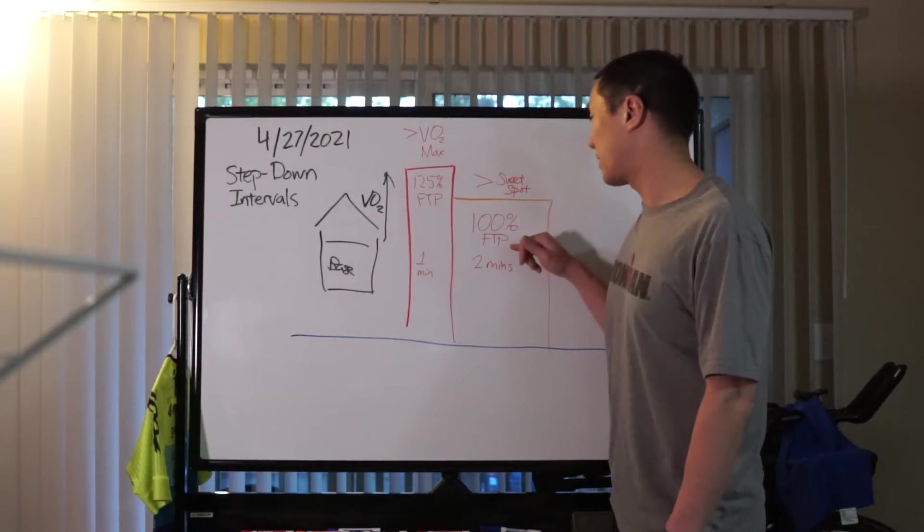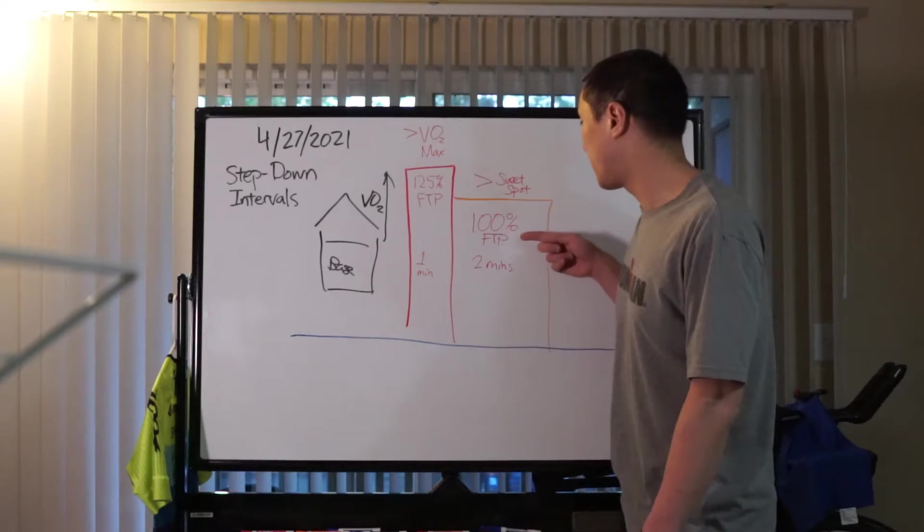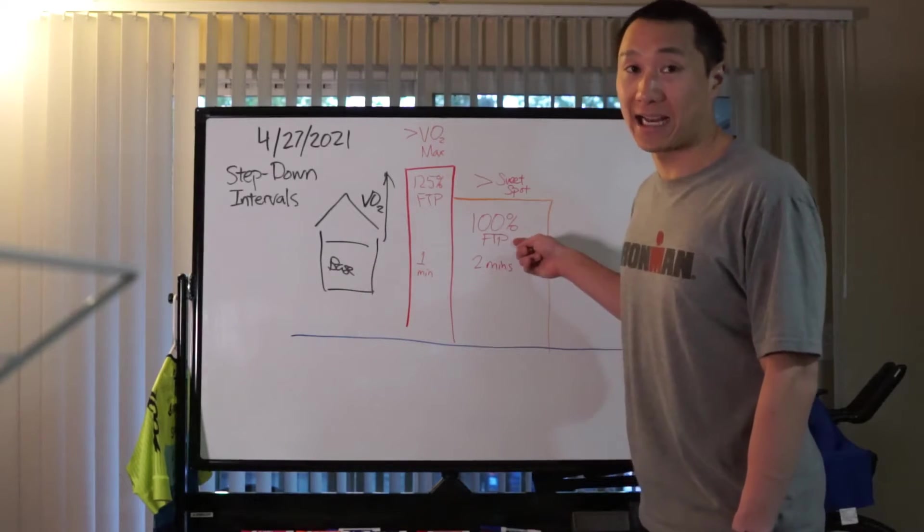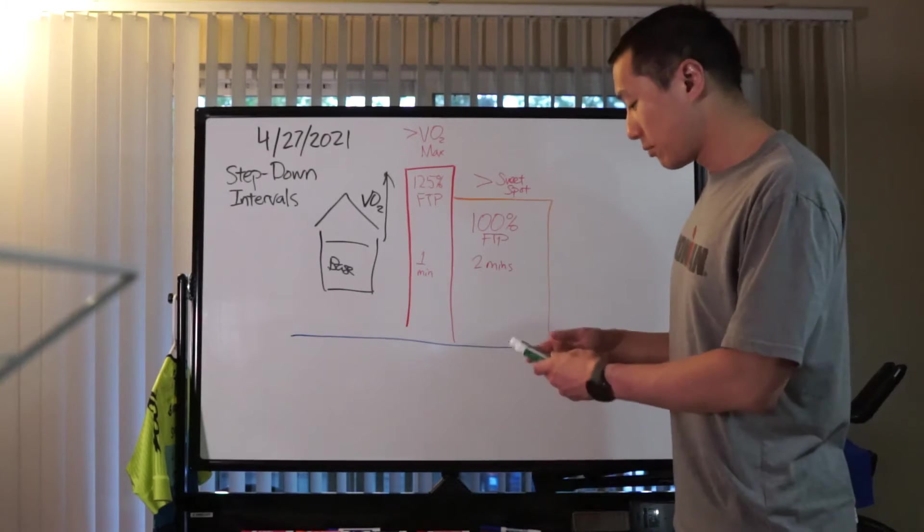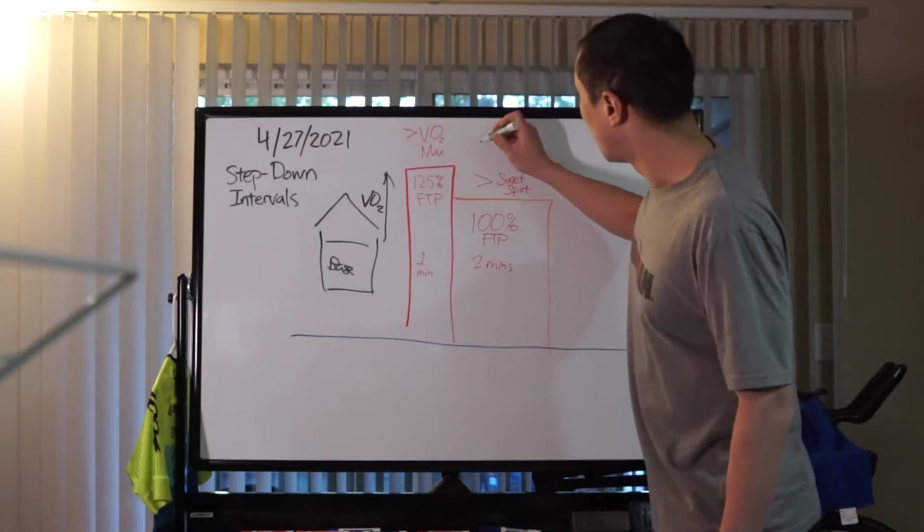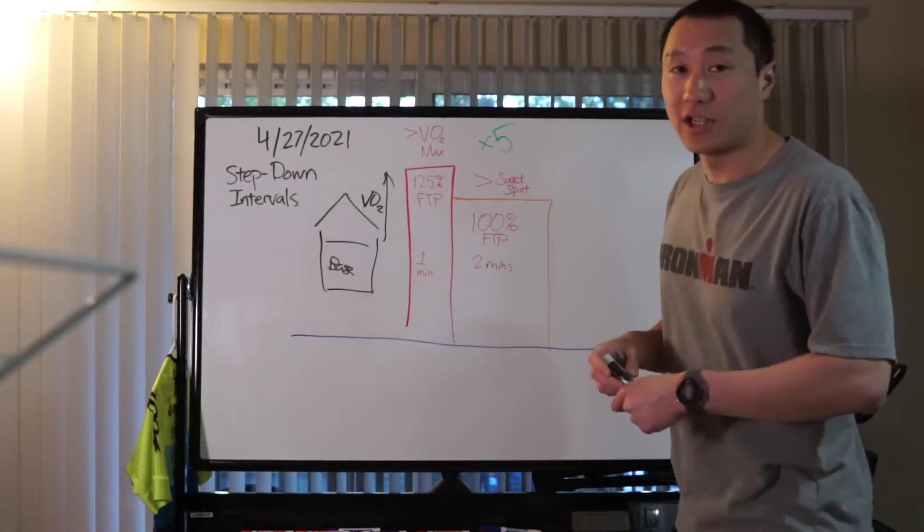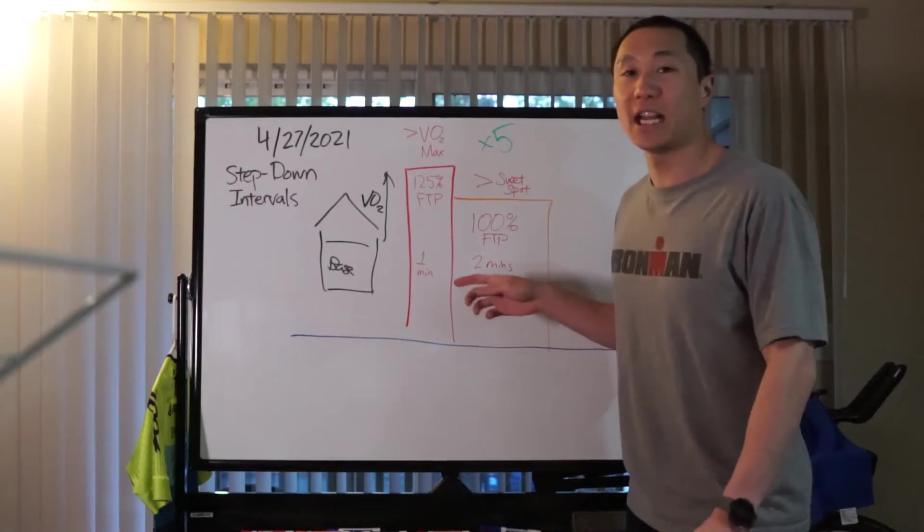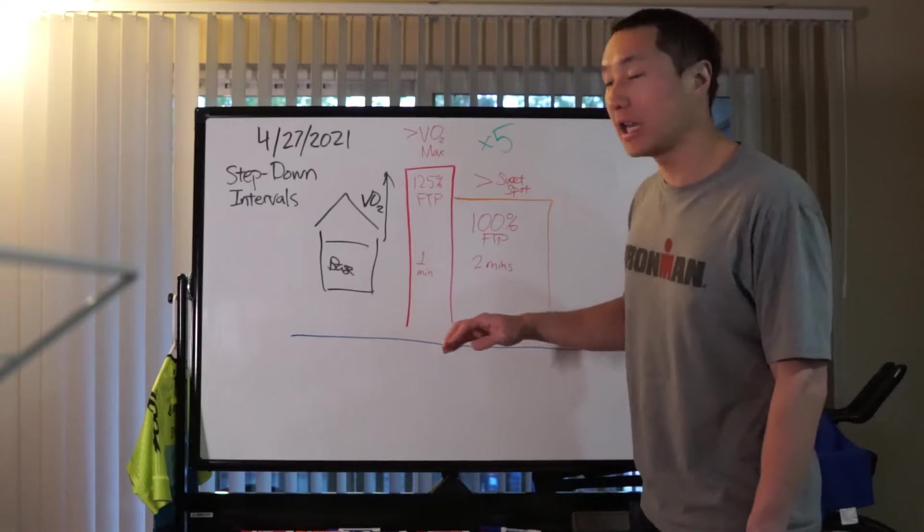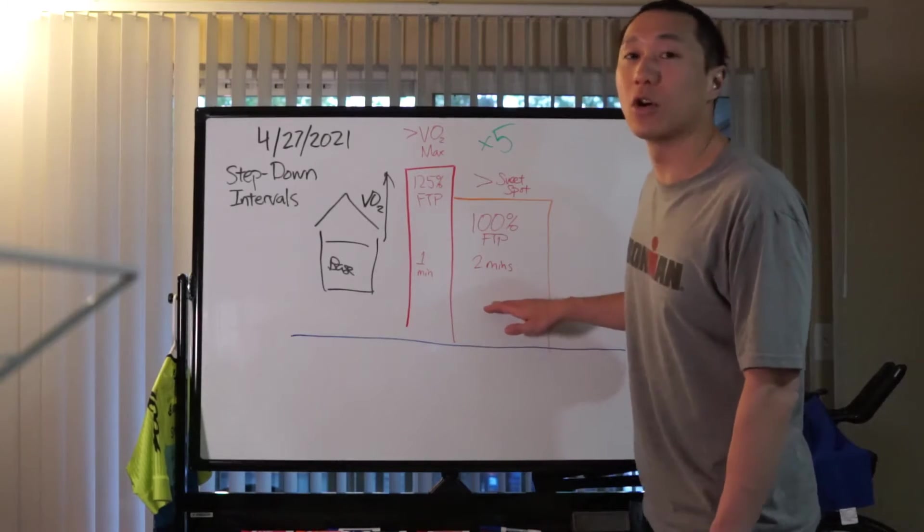Sweet spot is right around 90 to 95% of your FTP. I'm asking folks to do at FTP here. We'll be repeating this five times, and each rep is going to get harder as you start to fatigue. But again, maintaining control of your body, of your function, is going to be the goal of this workout.